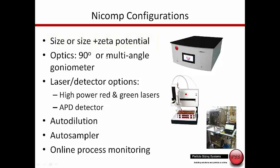The optics can either be configured as a fixed 90-degree system or multi-angle goniometer where we could measure the light scattering at essentially any angle. The light source could either be a standard laser or we could add high powered red or green lasers depending on the interaction of light with individual samples.